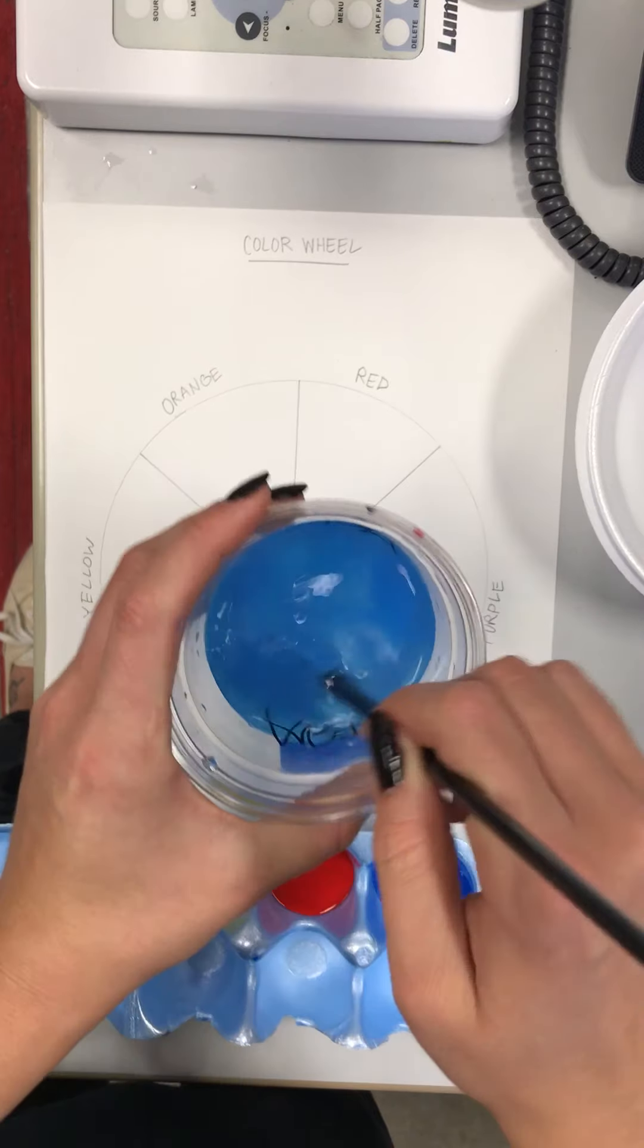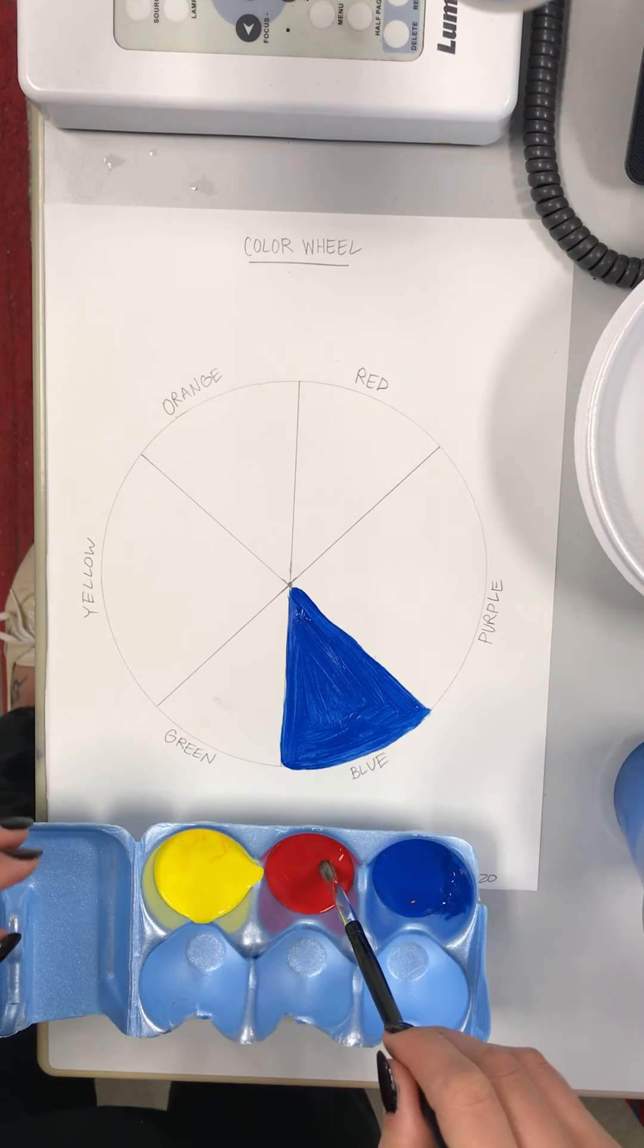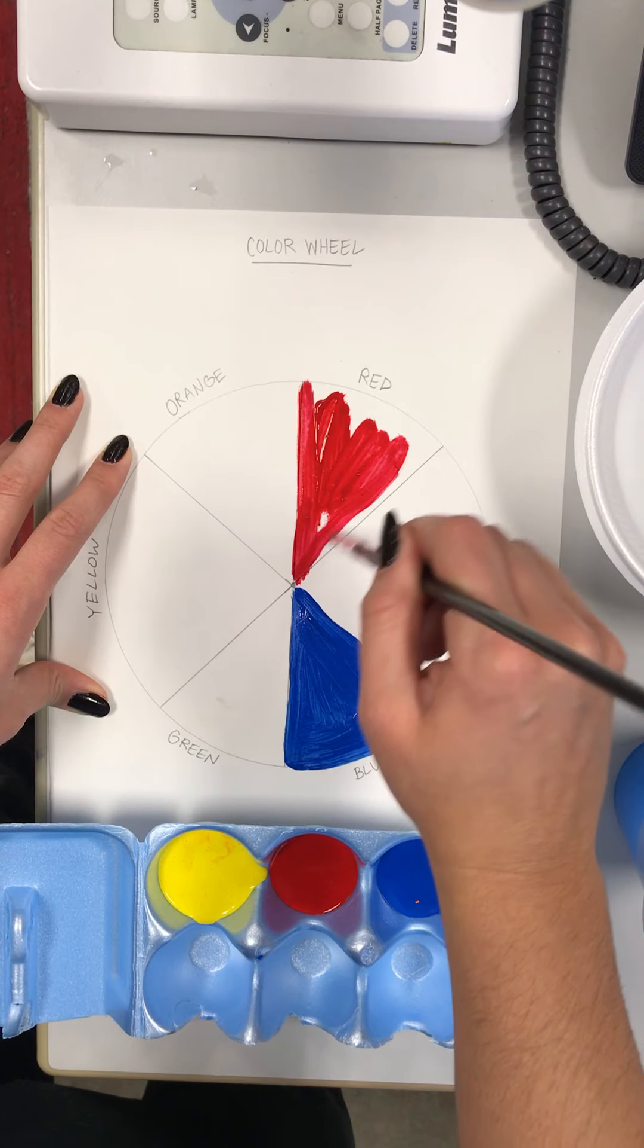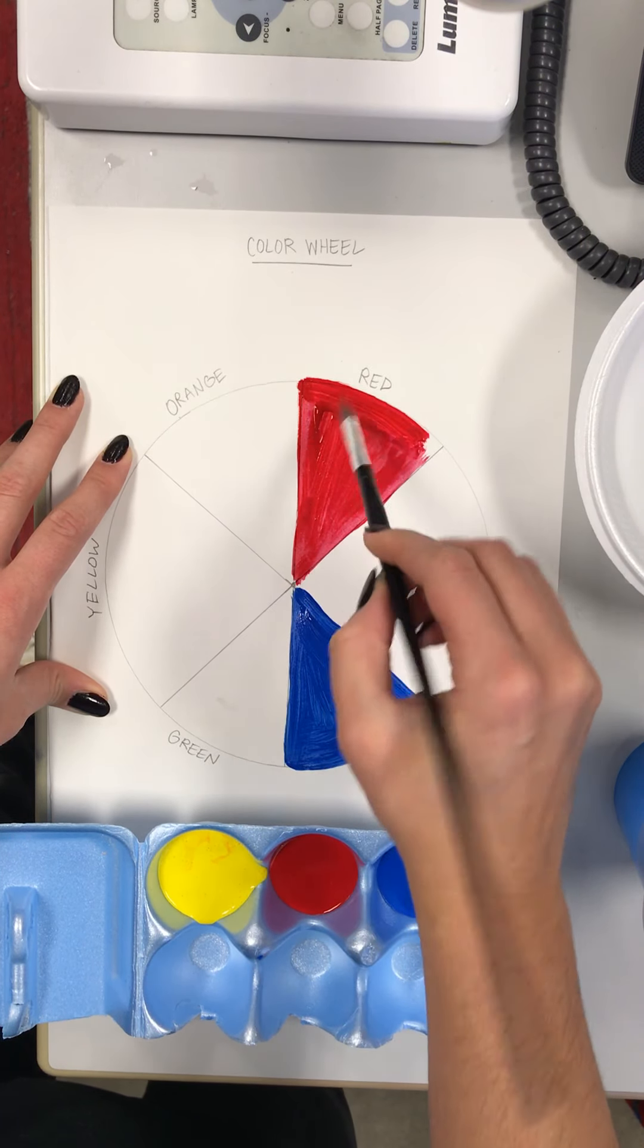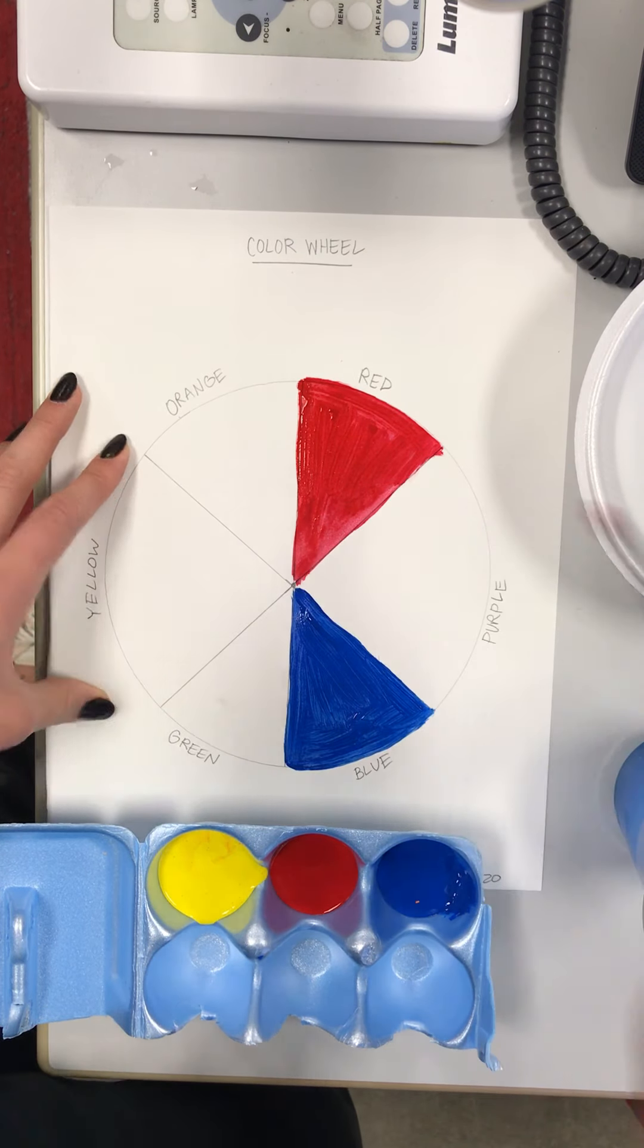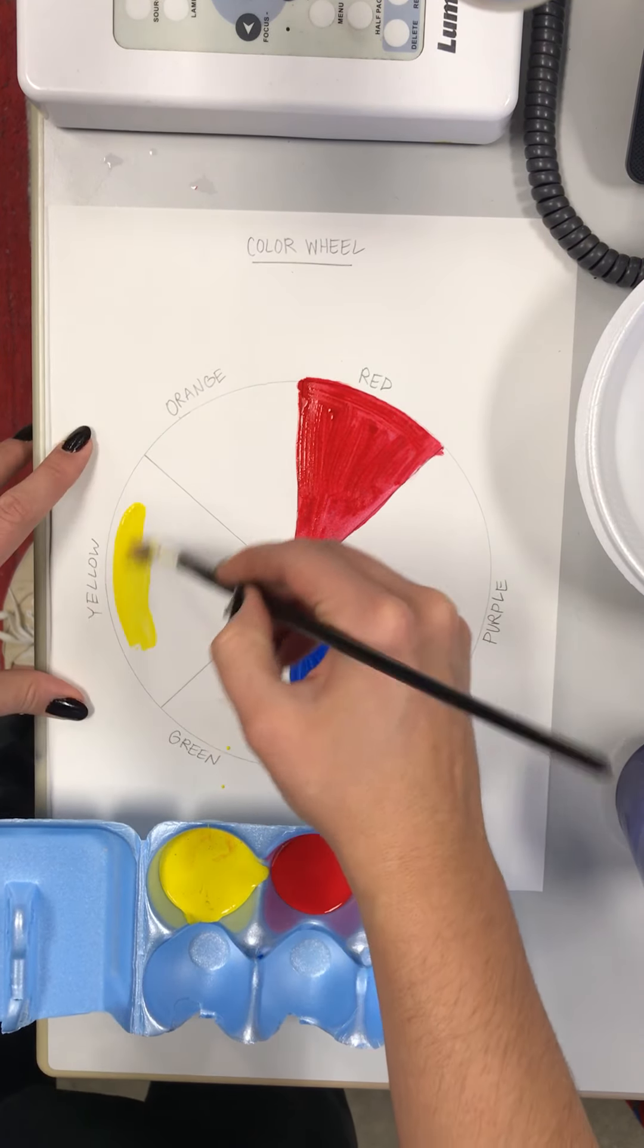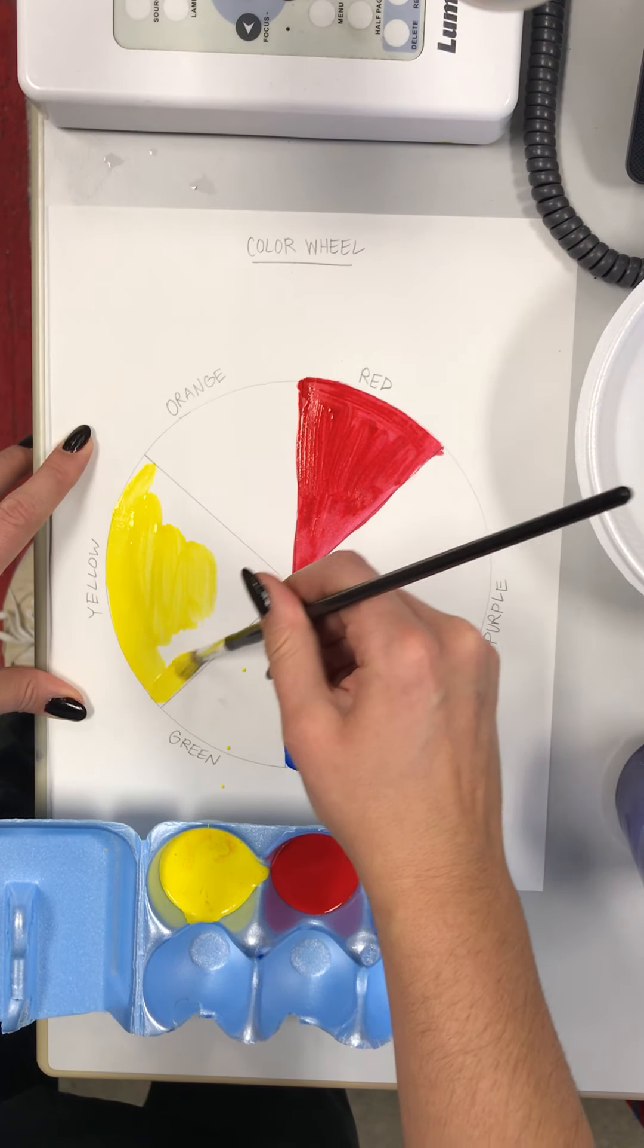I'm filling it in and I'm mixing in between my colors. Notice the primaries are not right next to each other, and that's because they help us mix our secondary colors, which is what we're going to be doing after we fill in with the primaries.